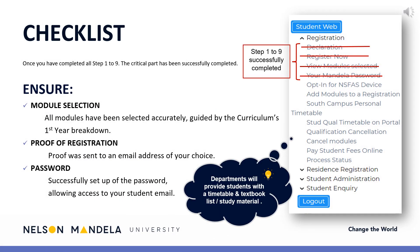Please pay careful attention to this checklist to ensure you have completed all important steps of this process: accurate module selection for your first year, proof of registration emailed to an address of your choice, and your password having been created or obtained. Curious about your reading material and timetable? Your department will be in touch with you, providing this information.